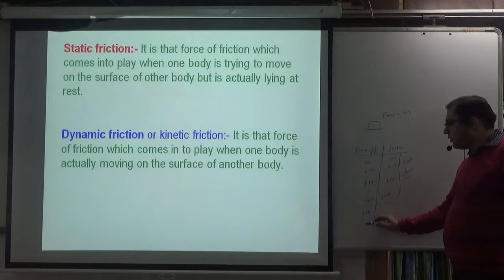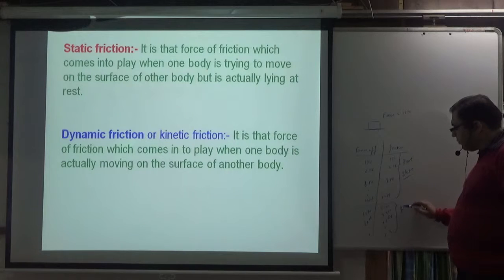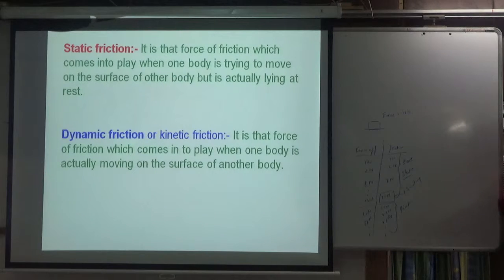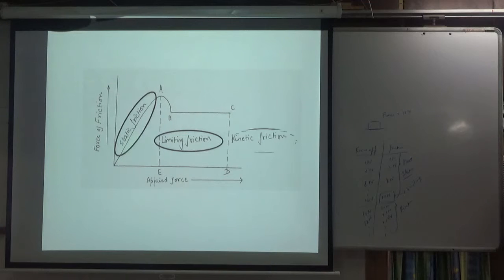If I apply force 11 N, 12 N and so on, then the force of friction decreases — for example to 9.5 N and so on — achieving a constant value which we call kinetic friction. The last value of friction when the body was at rest is known as limiting friction. This graph is important: in the beginning static friction increases linearly, then reaches limiting friction at 10 N, then kinetic friction is reduced slightly.